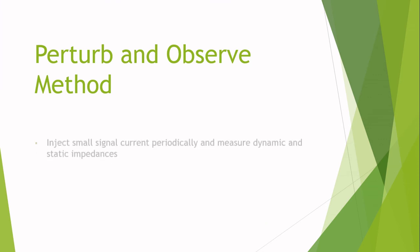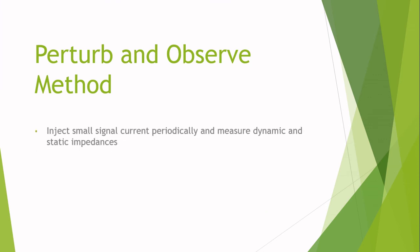The next one is the perturb and observe method. In this method we inject a small signal current at small intervals and measure the dynamic and static impedances.